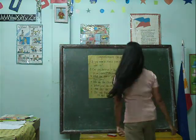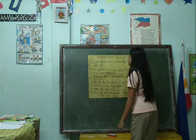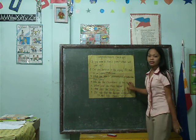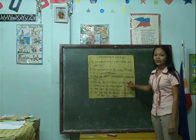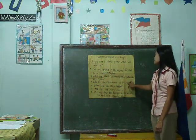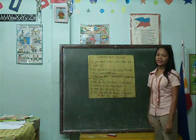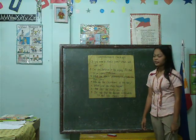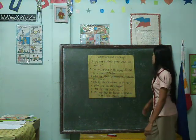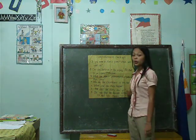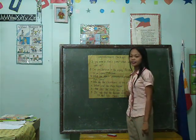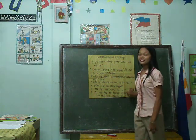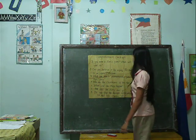Finish reading, class? Okay. Anura, who are the characters of the story? Very good. When did the story happen? Millar? Very good.